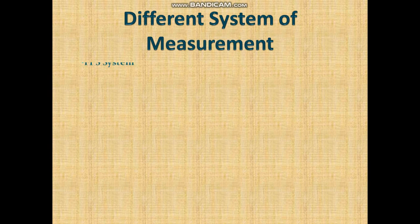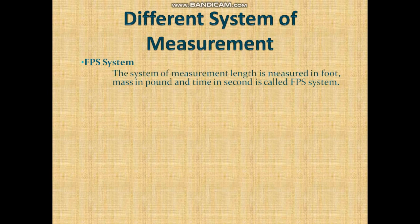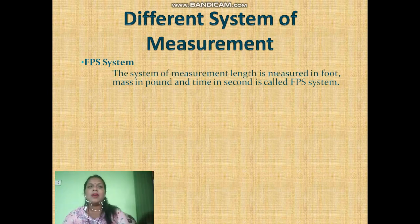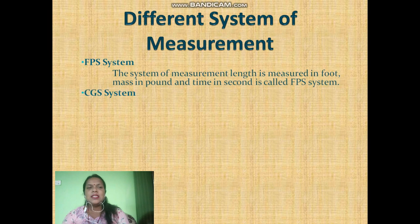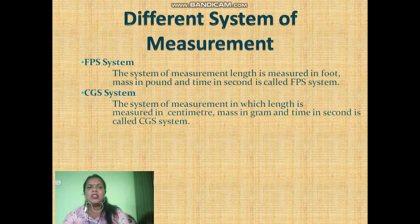The different systems of measurement are as follows. Number one: FPS system — the system of measurement in which length is measured in foot, mass is measured in pound, and time is measured in second. Number two: CGS system — the system of measurement in which length is measured in centimeter, mass in gram, and time in second.